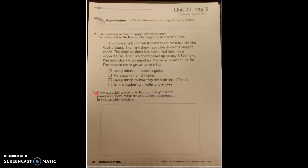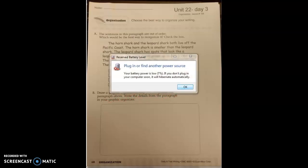Let's go to activity B. Which organizer do we often use when we compare and contrast? You're right, a Venn diagram. Let's read the instructions for letter B. Draw a graphic organizer to help you reorganize the paragraph above. Write the details from the paragraph in your graphic organizer.